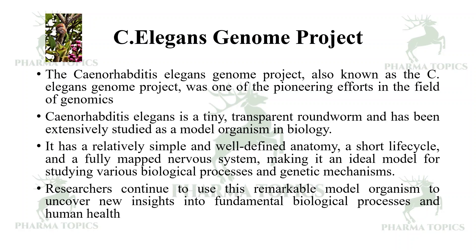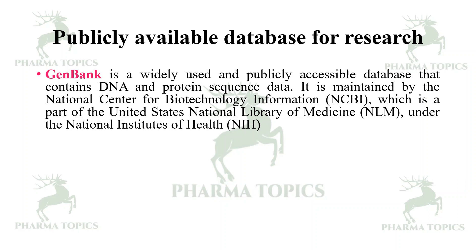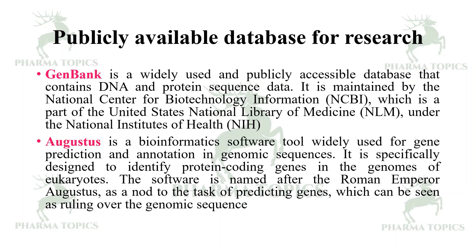Publicly available databases: GenBank is a widely used publicly accessible database containing DNA and protein sequence data, developed by the National Institutes of Health. AUGUSTUS is a bioinformatic software tool widely used for gene prediction and annotation in genomic sequences. It is named after the Roman emperor Augustus as a nod to the task of predicting genes, which can be seen as ruling over the genomic sequence.